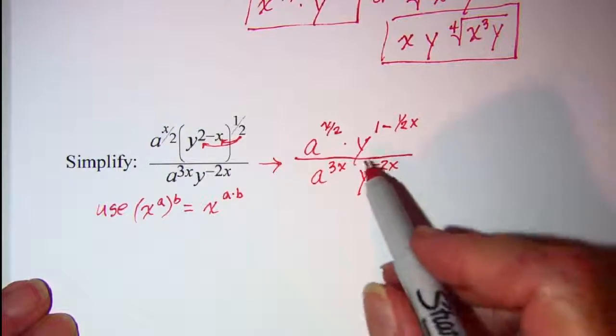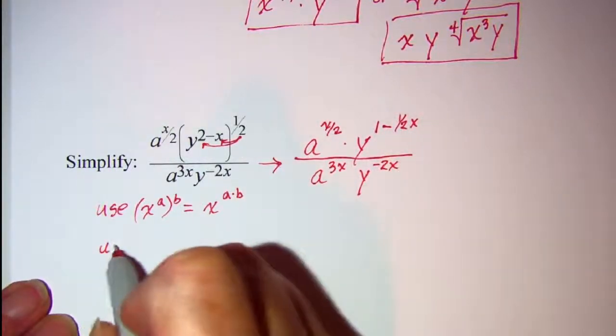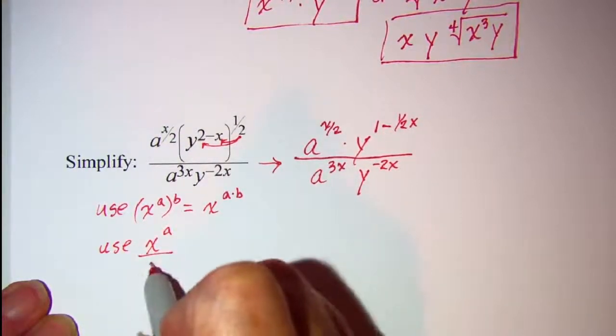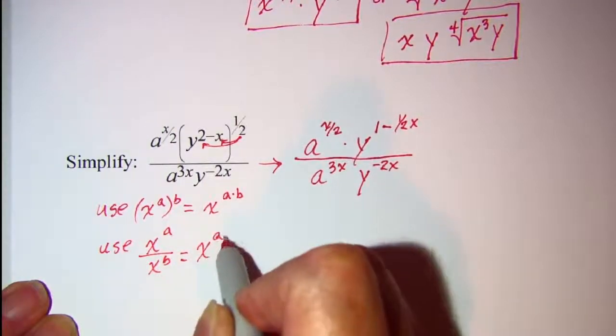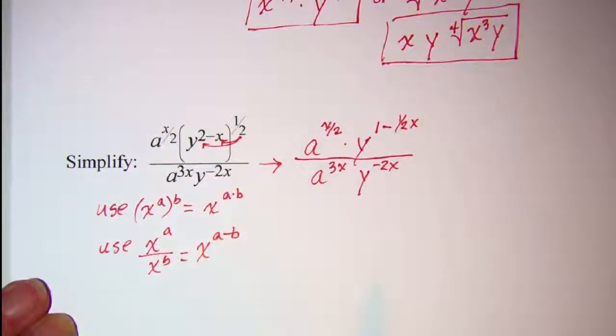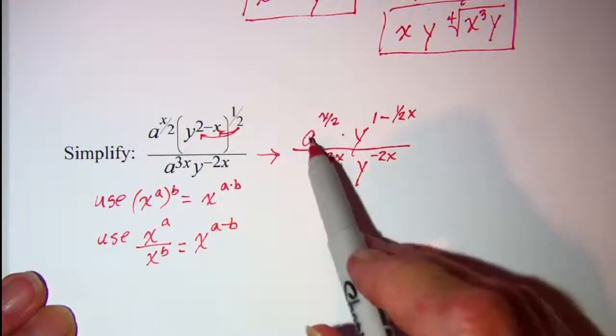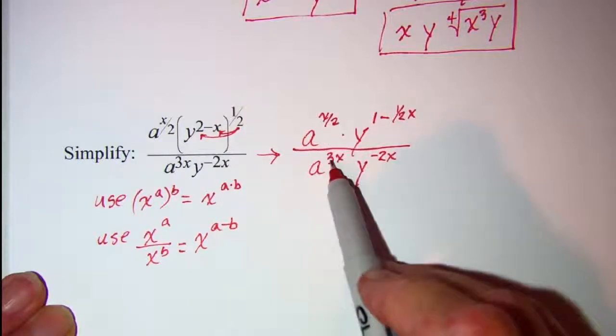Then I'm going to use the rule. So x to the a over x to the b is equal to x to the a minus b. Because I have my fraction right here with the base of a. So I'll subtract these exponents.